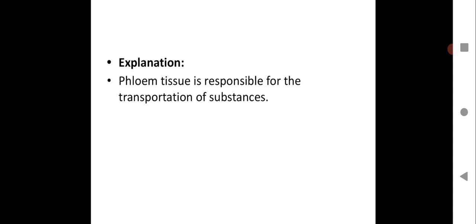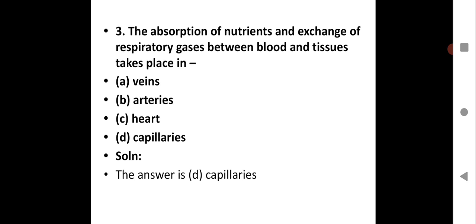Question number three - The absorption of nutrients and exchange of respiratory gases between blood and tissues takes place in - option A veins, option B arteries, option C heart, option D capillaries. The absorption of nutrients and exchange of respiratory gases between blood and tissue takes place in capillaries.